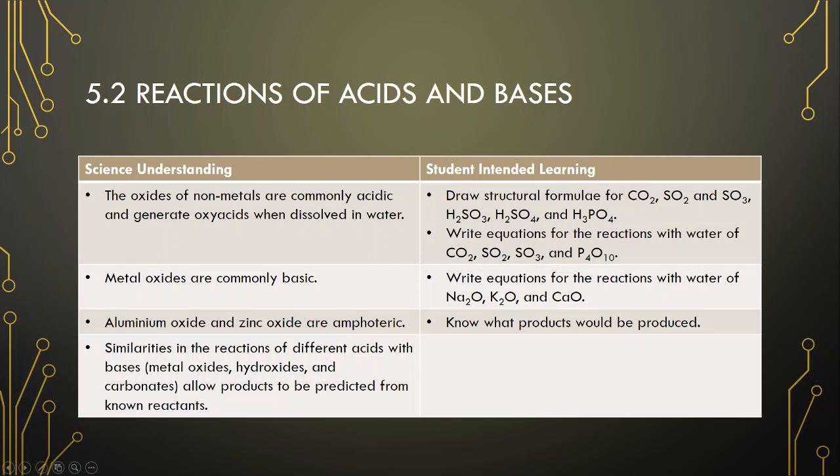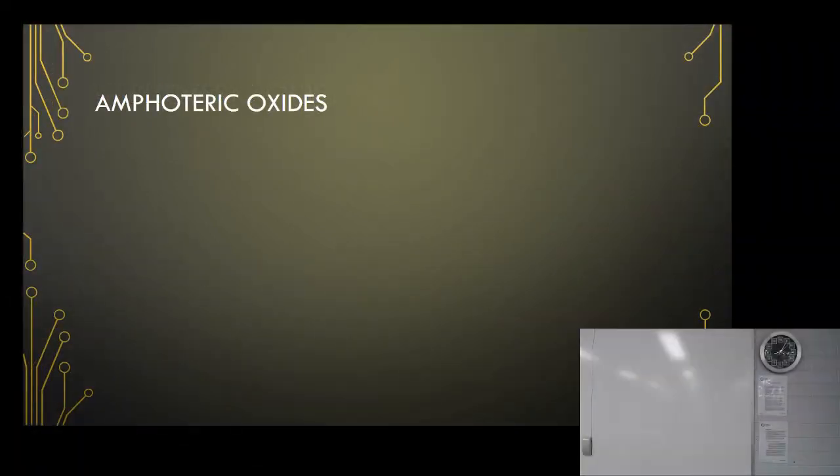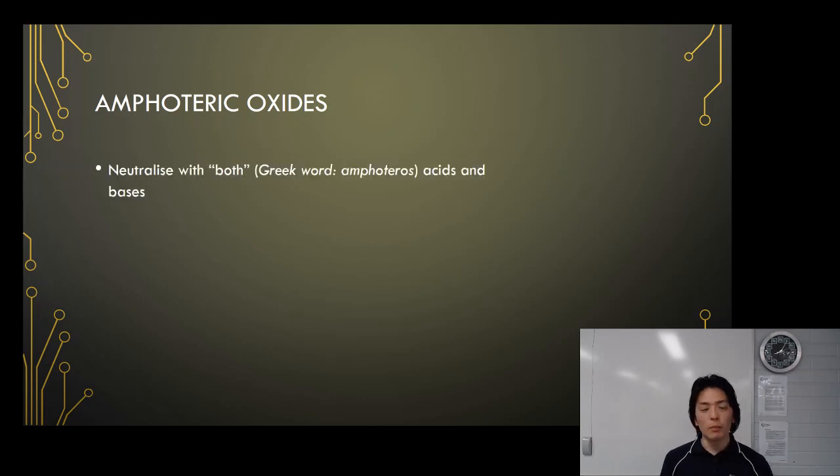So, amphoteric oxides. What does amphoteric mean? Amphoteric means they can react with base as well as acid, so they would neutralize whichever they are reacting with. If it's reacting with acid, it will neutralize the acid. If it's reacting with base, they can neutralize the base.